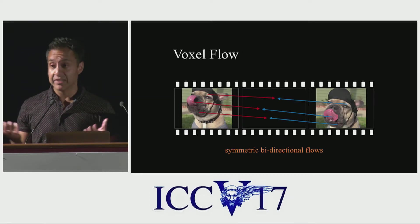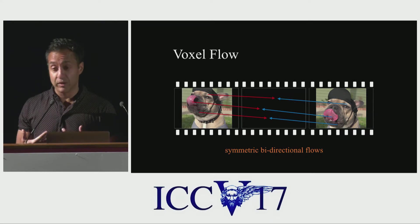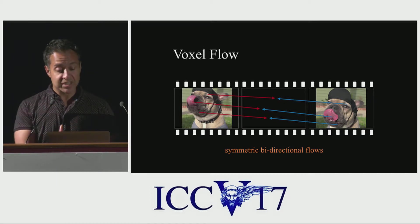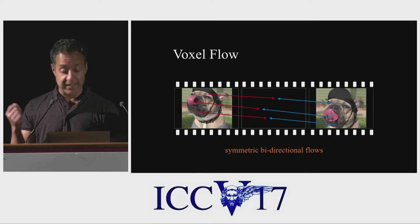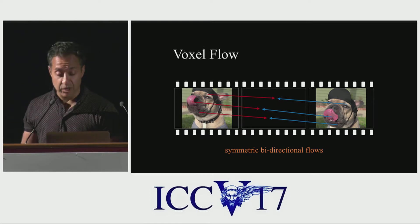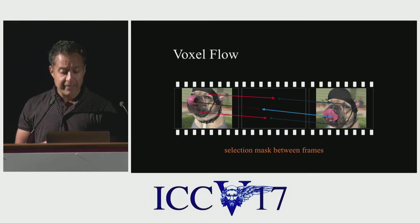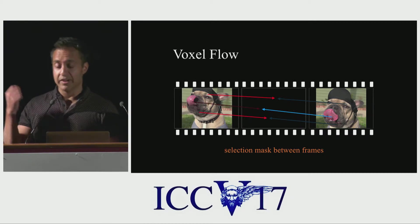We hope to achieve the best of both approaches — training in an unsupervised fashion on any existing video, but also copying pixel values from neighboring frames rather than hallucinating them. So we use an optical flow representation we call voxel flow. At each pixel of the intermediate frame, we compute an optical flow value — delta x, delta y — and assume it's symmetric in time, so the flow backwards is the negative of the flow forwards. We also compute a third value, z, which is a mask — a value between zero and one — that linearly blends the color from the earlier and later frame.